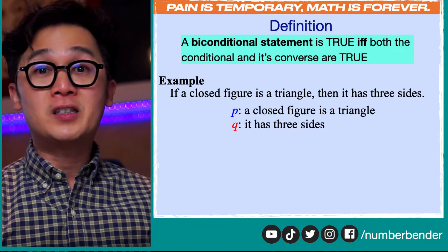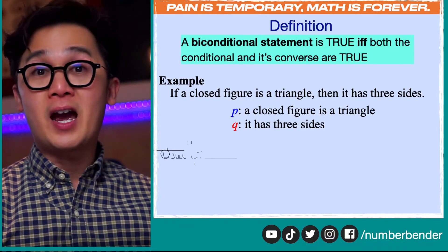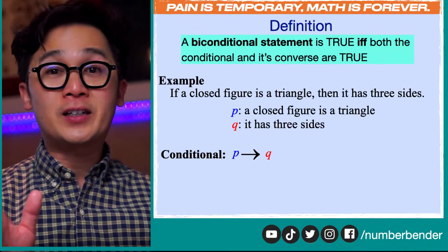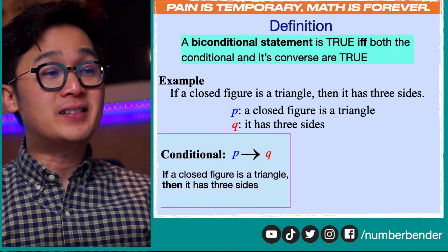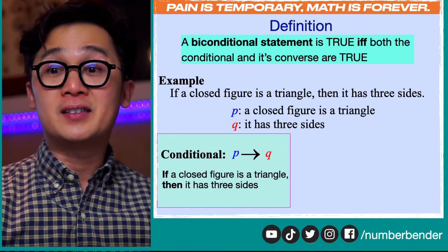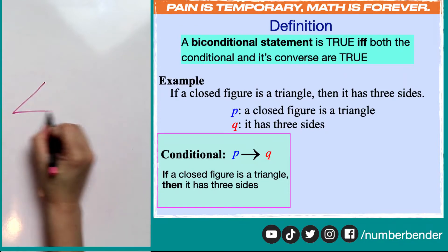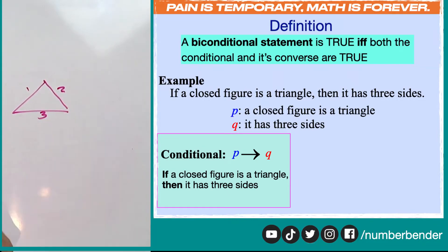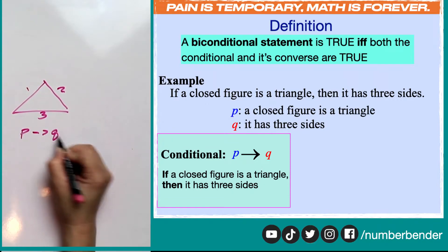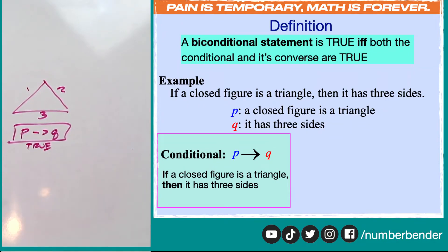Knowing that we have two parts of this conditional statement: P would be 'a closed figure is a triangle,' and Q is 'it has three sides.' The conditional statement P then Q is straightforward: if a closed figure is a triangle, then it has three sides. We know this statement is true because if a closed figure is a triangle — let's draw a triangle — we know it has one, two, three sides. So the conditional statement P then Q is satisfied, and we know this is a true statement.